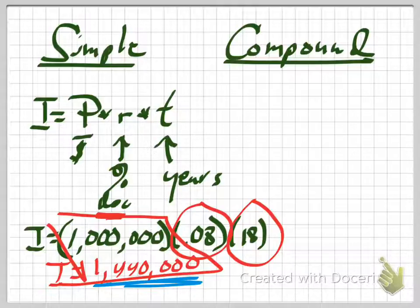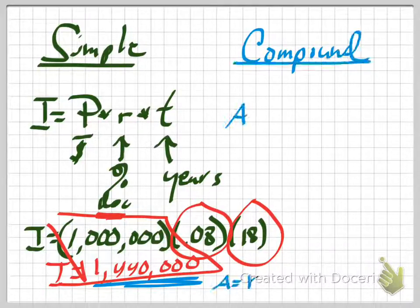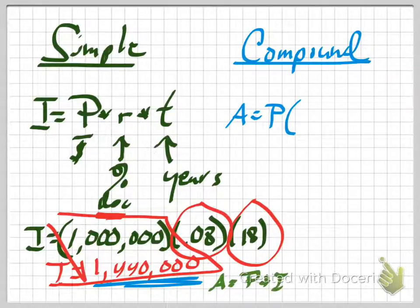That is just simple interest adding up over the years. Now the difference with compound interest: if you want to find the actual amount in the account with simple interest, you take the original principal of $1 million and add the interest, giving $2,440,000. With compound interest, the interest you earn goes right into the account, so you then get to earn more interest on the interest itself. Because of the way that formula works, it always gives you the amount A directly.